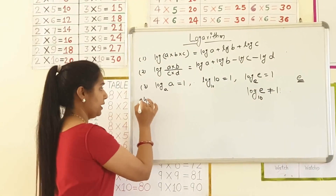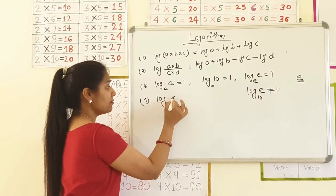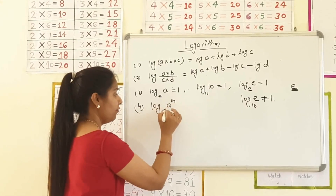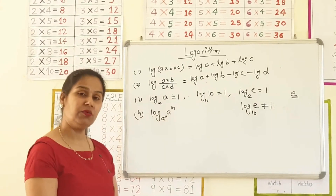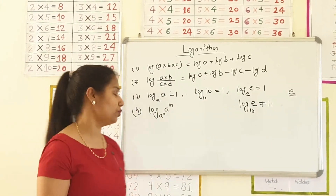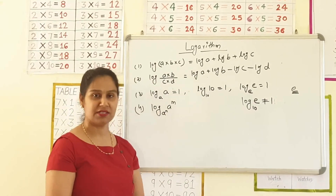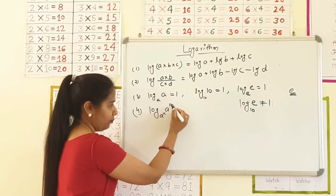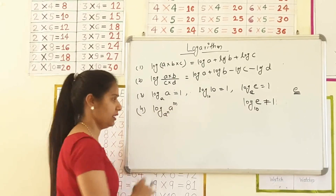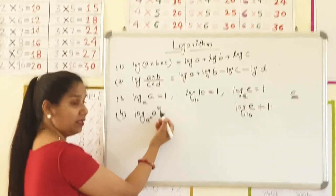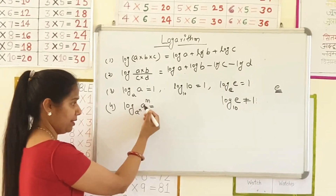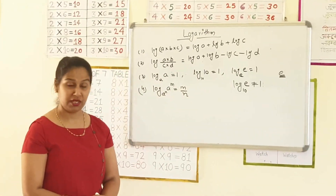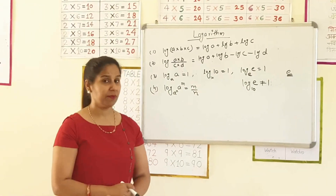Now the next property is: if the base value and the place value are the same but they have different powers, then in this property, powers are different. When the powers are different and numbers are the same, then the answer is M over N.